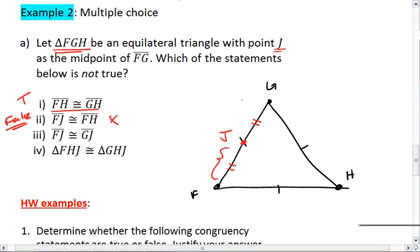FJ congruent to GJ is true. And triangle FHJ congruent to triangle GHJ. That one is also true. So our false statement is the second one. That one is true.